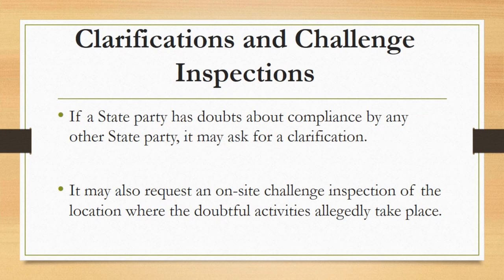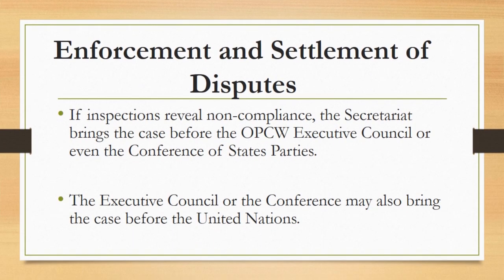Challenge inspections are a necessary complement to routine verification procedures, which are limited to declared facilities. Activities taking place outside declared facilities are not covered by routine inspection, so the challenge inspection fills this possible gap in the monitoring system. If inspections reveal non-compliance, the secretariat brings the case before the OPCW Executive Council or the Conference of States Parties. Measures that can be taken include sanctions such as suspension of membership rights, and the case may also be brought before the United Nations Security Council, which may take enforcement action according to Chapter 7 of the UN Charter.